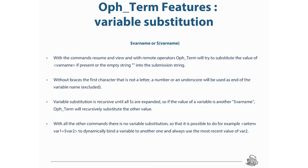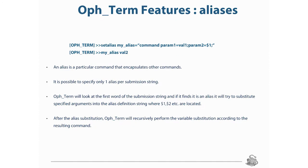Another feature of the terminal is variable substitution. You can define your variables inside the Ophidia environment. You can use braces or not — for example, if you want to include a space inside the variable name. Variable substitution is recursive until all variables are expanded. You can also define aliases to simplify the utilization of the terminal. For example, set alias my_alias with a particular operator and a parameter; then you can use simply my_alias with val2, and the system automatically substitutes the value inside the related command.